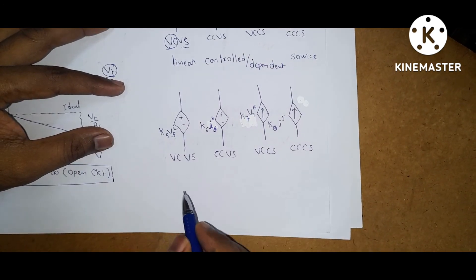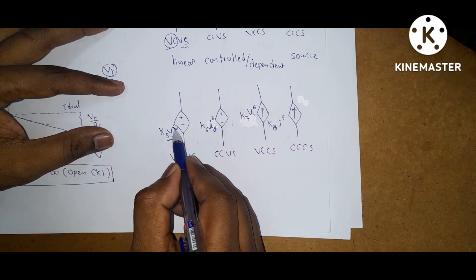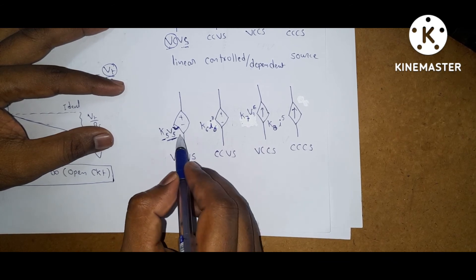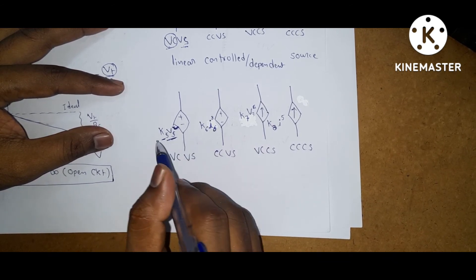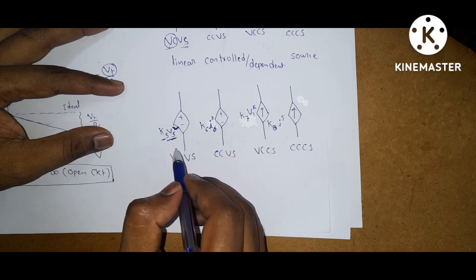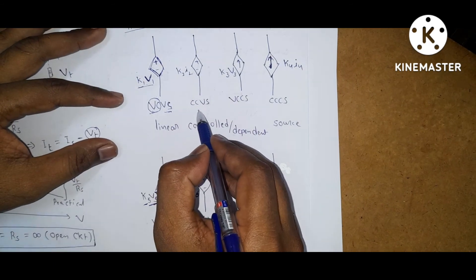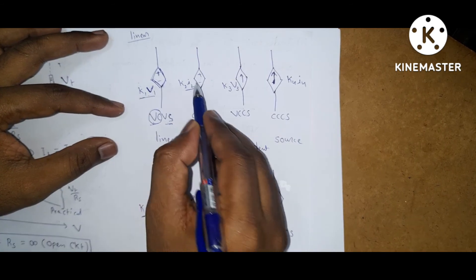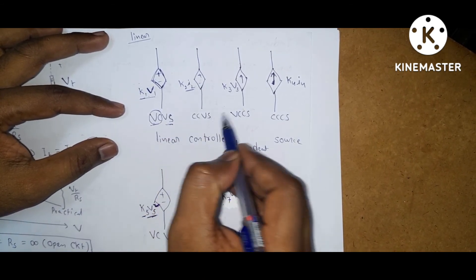Coming to the non-linear dependent source, here the control variable varies non-linearly — for example, squared — so this is called a non-linear control source or non-linear dependent source. Similarly, for a current control voltage source, the control variable is current and the source is voltage.